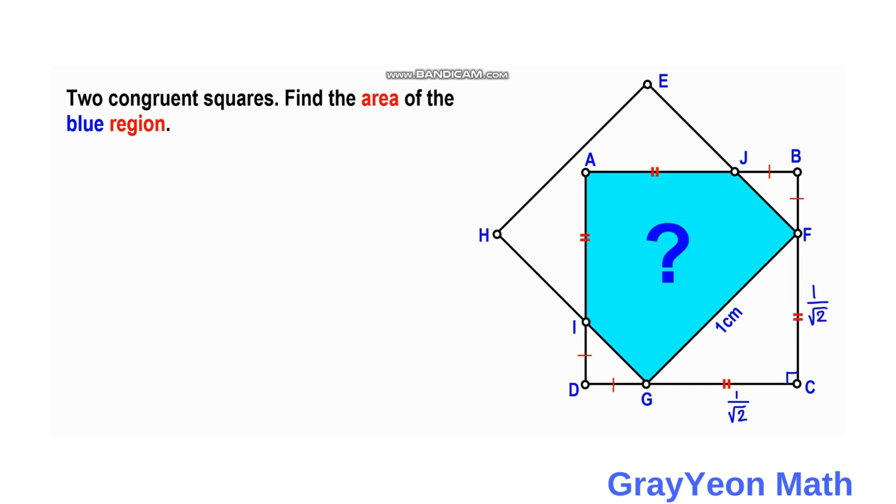Since these are congruent squares, the side length of A, B, C, D is also 1, so this segment DG we need to subtract from 1 this 1 over square root of 2. So 1 minus 1 over square root of 2, and this also we need to subtract from 1, 1 minus 1 over square root of 2.